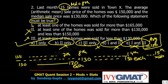What is the second statement saying? At least one of the homes was sold for more than 130 and less than 150. Is there any home that is between 130 and 150 in our example? Between 130 and 150 there is no value at all, so the second statement is not compulsorily true.